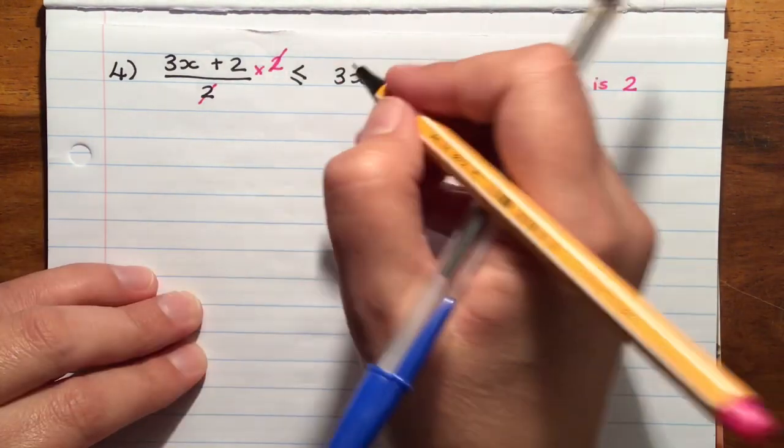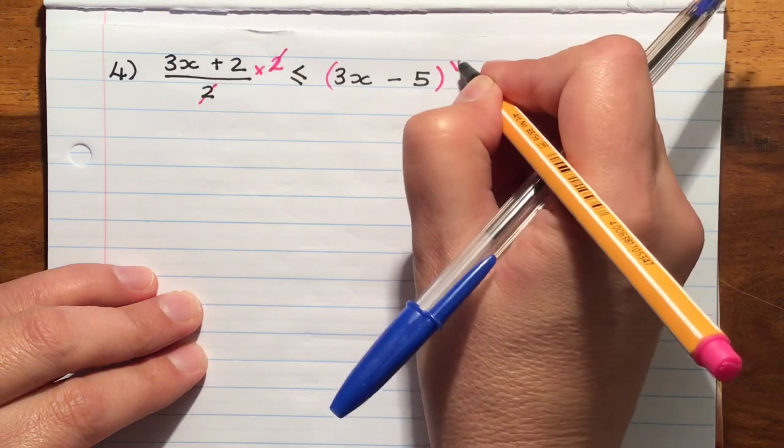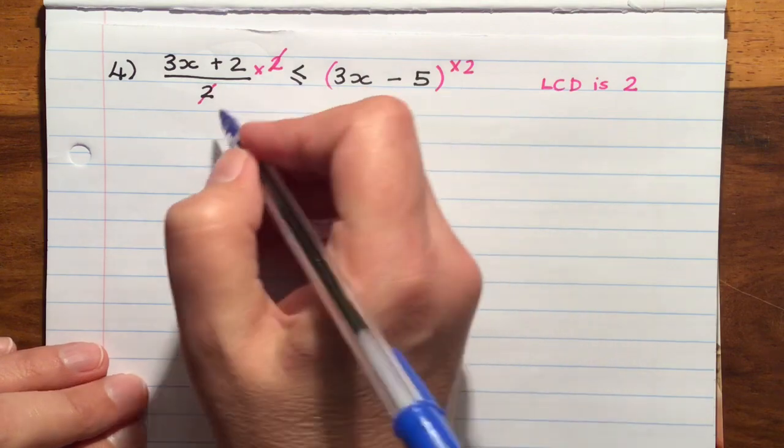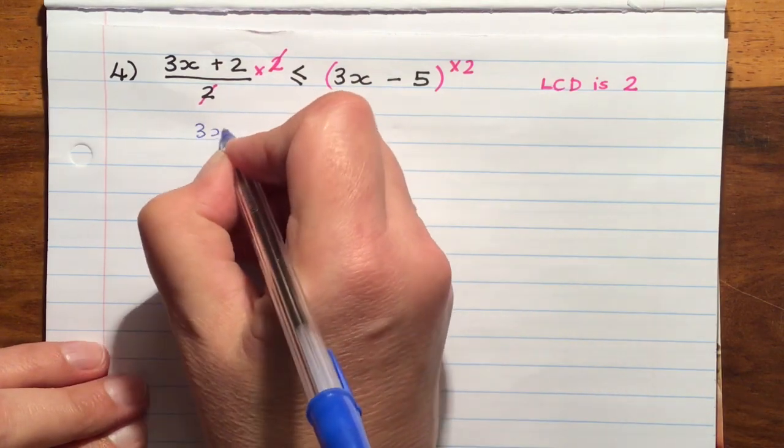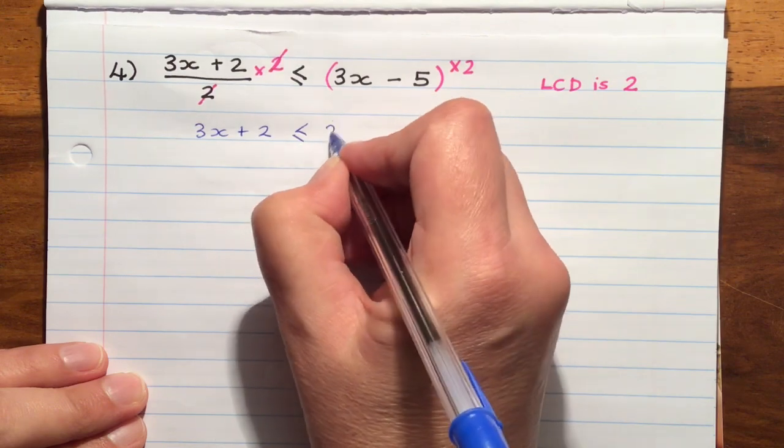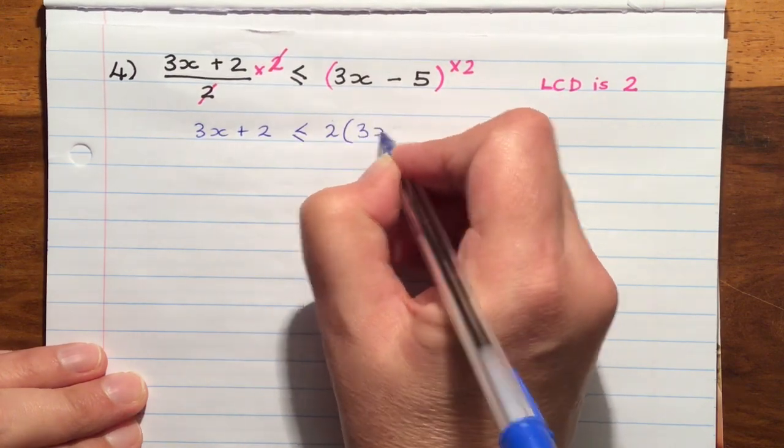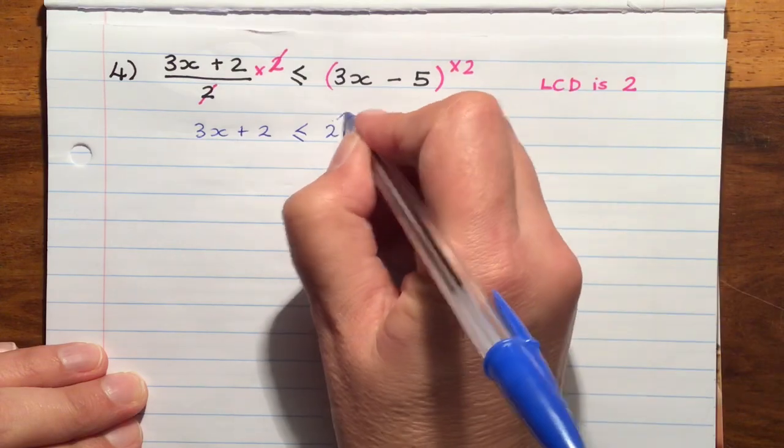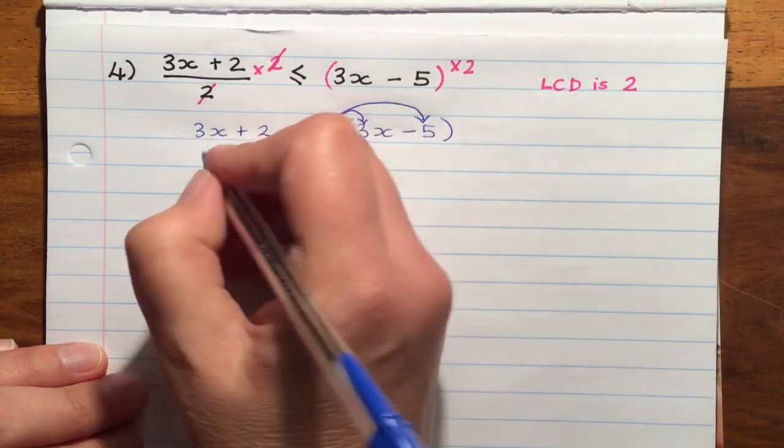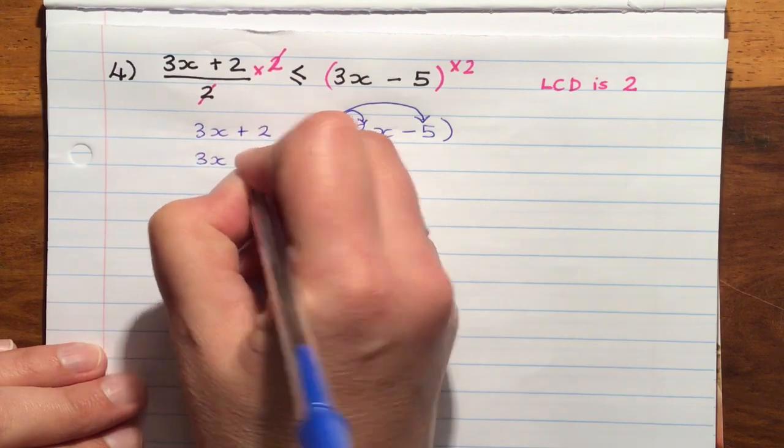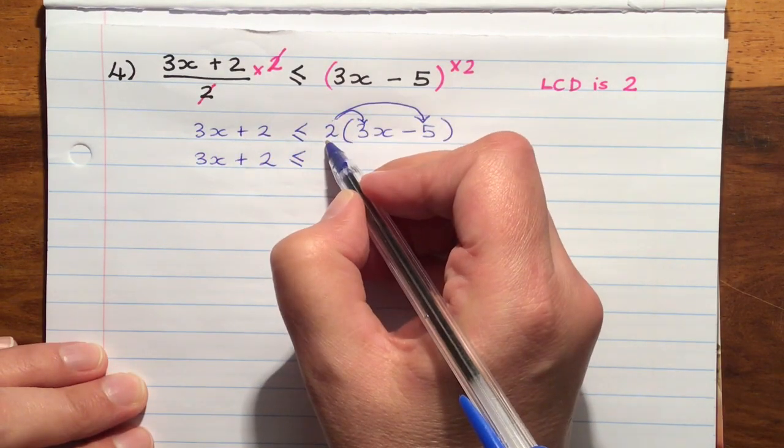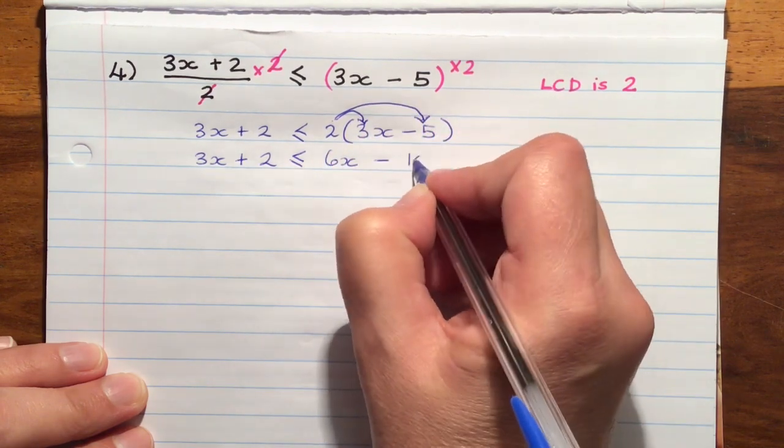So on the left hand side, you can see the reason for that is we are now going to get rid of the fraction and we're also going to multiply the right hand side by 2. It has to be the whole of the right hand side. So you might want to first write it out like this and then you'll notice that we are able to distribute the 2. So on the right hand side, we're going to now have 6x minus 10.